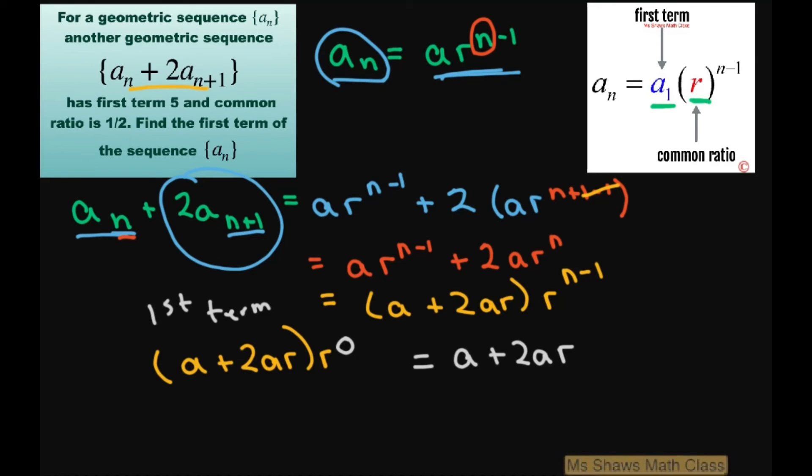Therefore, we're going to have a plus 2ar equals our first term which is 5. Now our r is 1/2, and again, this is for this sequence. So substituting in 1/2,